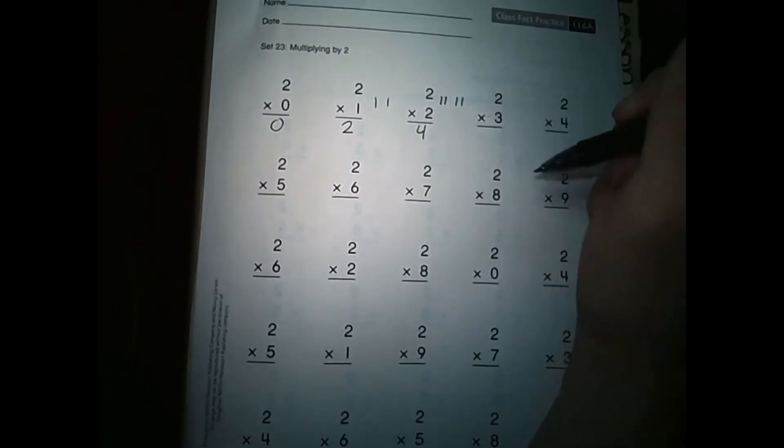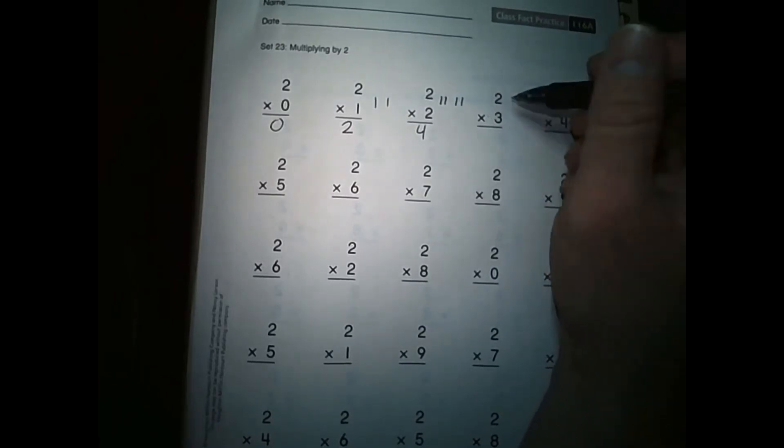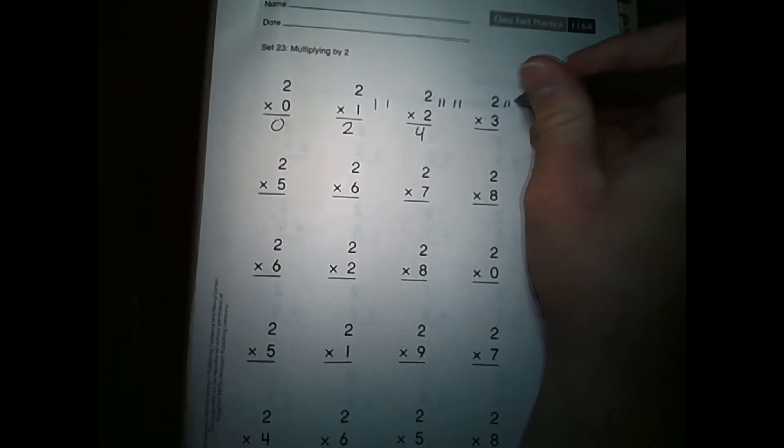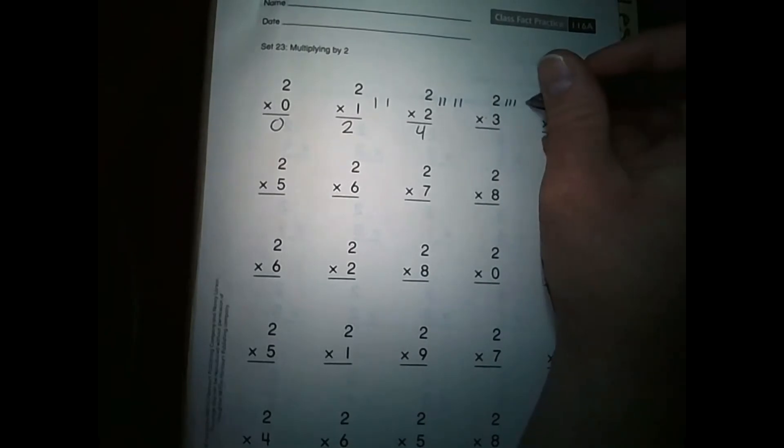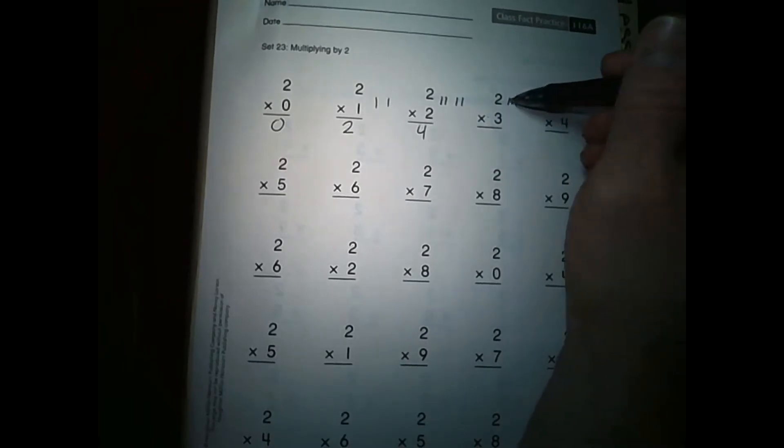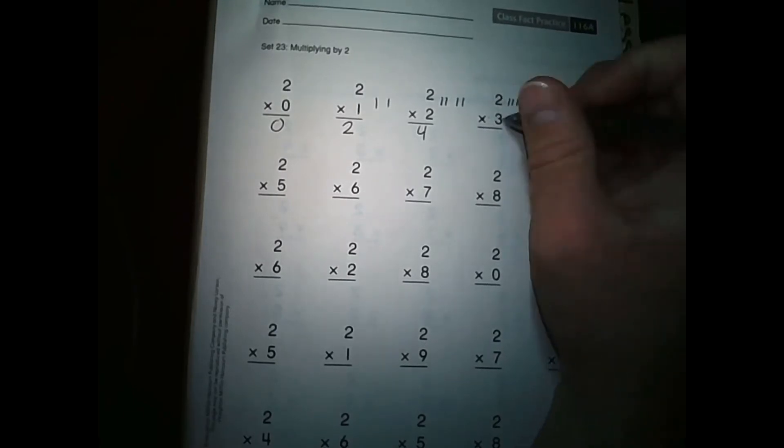Let's go ahead and look at two times three. Well, again, it's just telling us we have two groups of three. So here's my first group of three, one, two, three. Here's my second group of three, one, two, three. So all together, what do I have? Let's count them. One, two, three, four, five, six. So two times three is six.